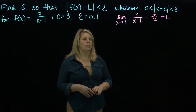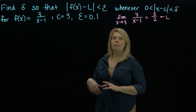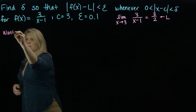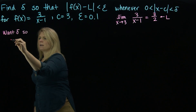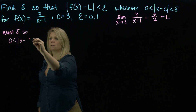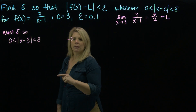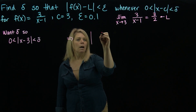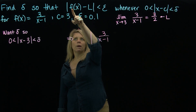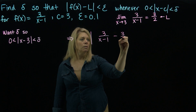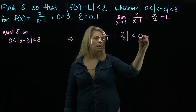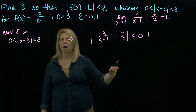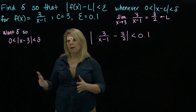We need to think about this definition of limit. There's a direction of implication: we need to find a delta so that 0 < |x − 3| < delta implies |f(x) − L| < epsilon. So we want the delta inequality to imply the epsilon inequality. We're going to work with the epsilon inequality as scratch work to figure out what delta will work.